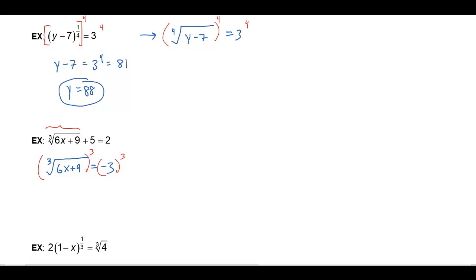So if I cube the cube root, that's going to give me 6x plus 9. It'll just get rid of the cube root, and on this side, I'll get a negative 27. So now I can solve this simple linear equation. I'll subtract 9 from both sides. That'd give me a negative 36, and then if I divide both sides by 6, I'll get x is a negative 6.